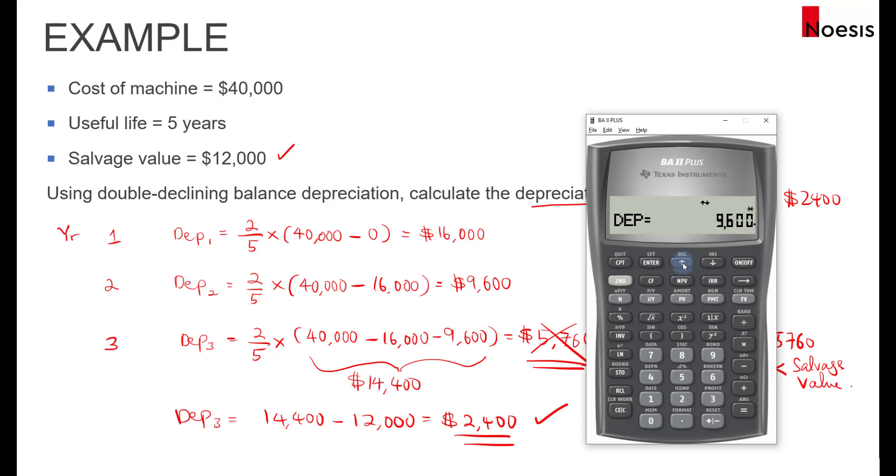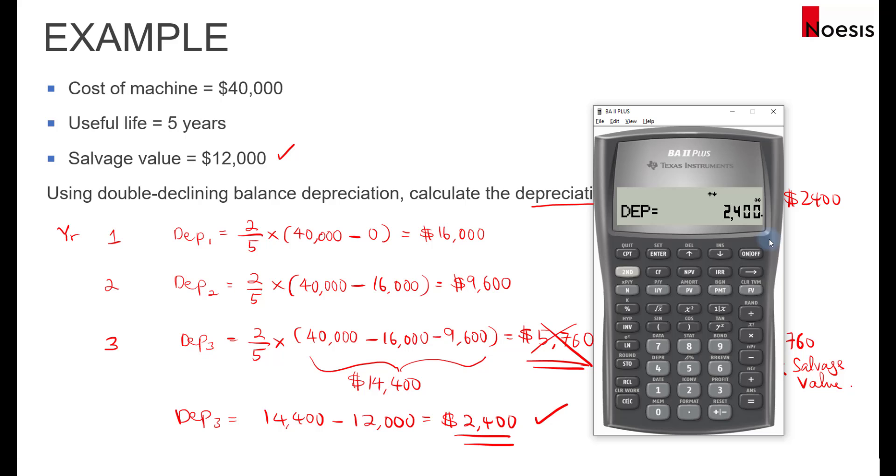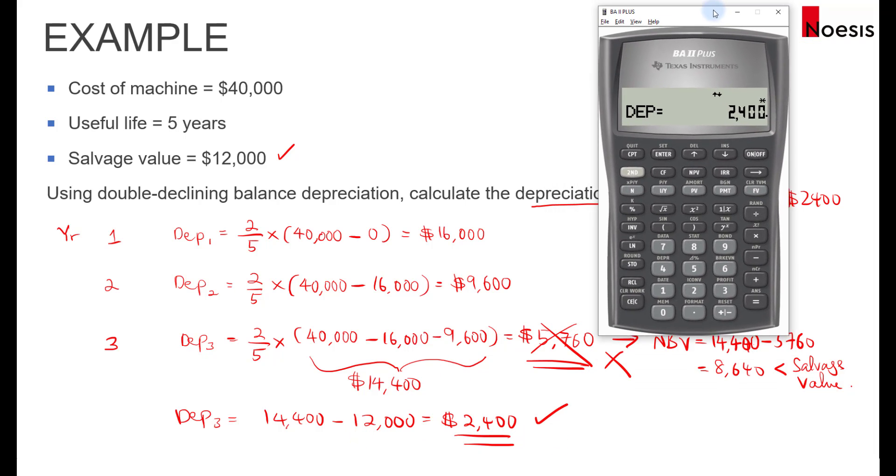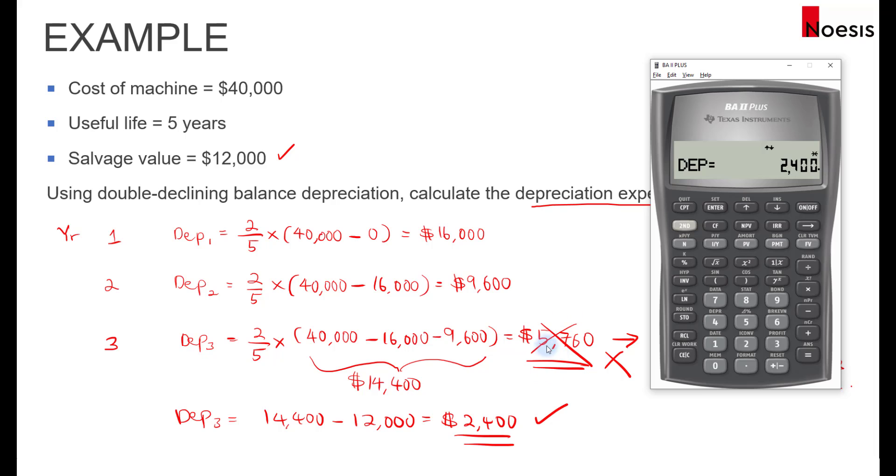If I go back up and change this to three, this time around, the calculator will automatically compute the correct depreciation expense based on the salvage value. So that's 2,400. You will not have an issue where you will calculate the wrong depreciation expense using the formula. So this is a quick hack.